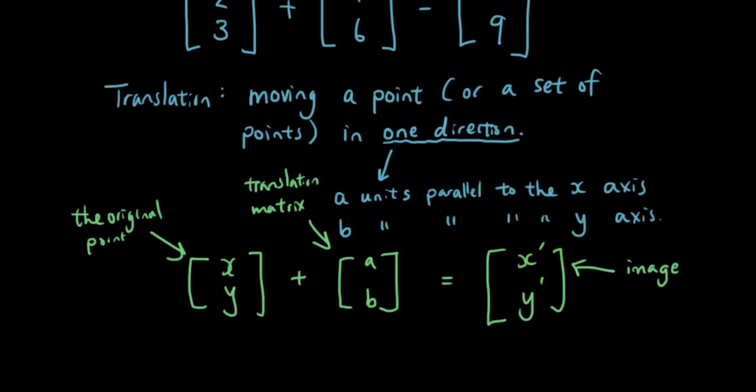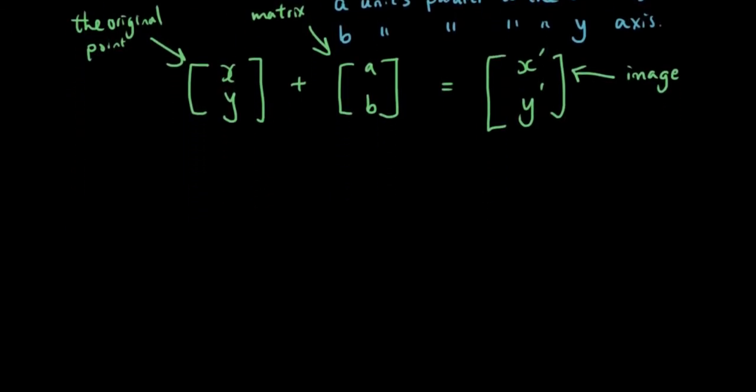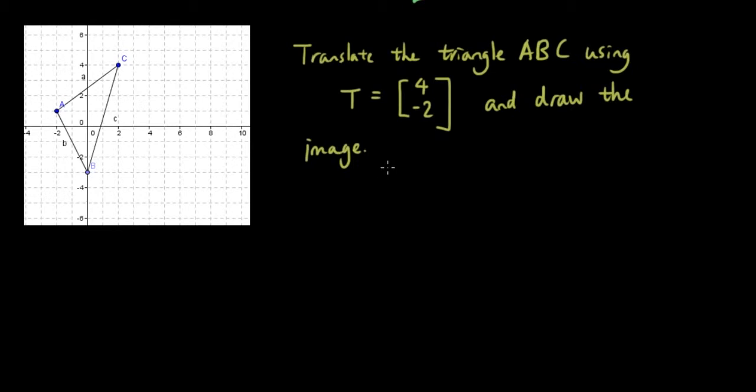So let's apply this concept we have learned to a question. Okay so let's have a quick go at this problem here. Translate the triangle ABC as shown in this diagram using the translation matrix 4, -2 and draw the image. Okay so let's do it one point at a time. So we're moving 4 units horizontally and negative 2 units vertically.